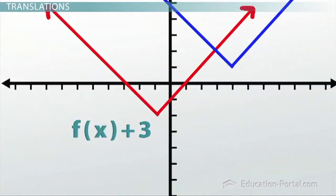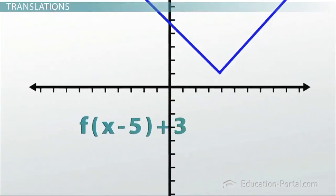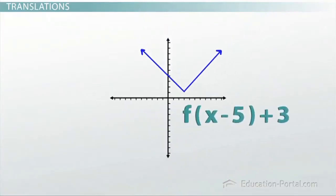So that means that f of x plus three on the outside shifts it up three. But then doing f of x minus five on the inside is actually going to shift it five to the right. That means this final graph over here must be f of x minus five plus three. Let's summarize what we just learned.